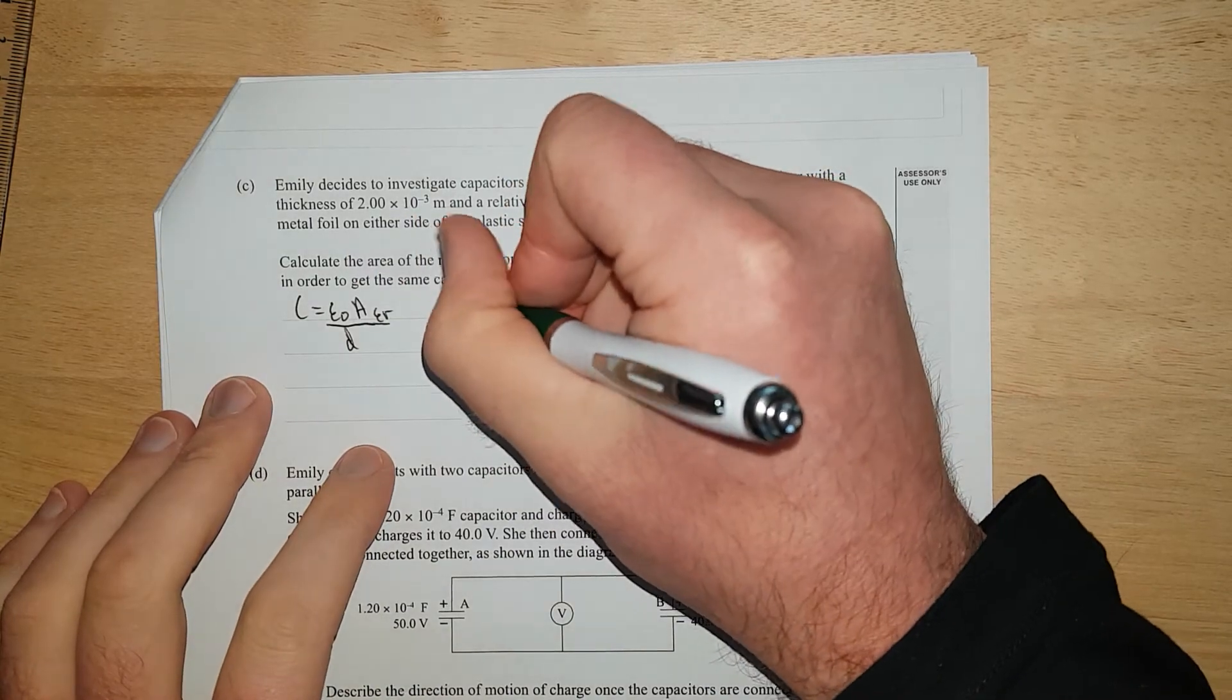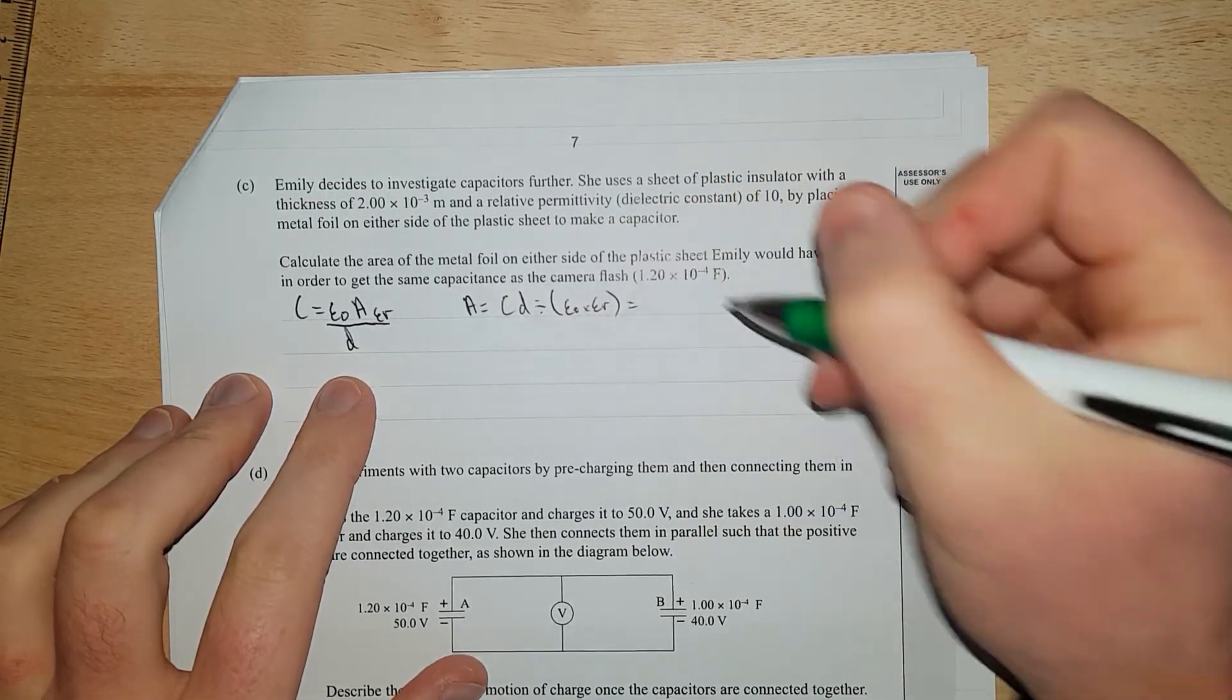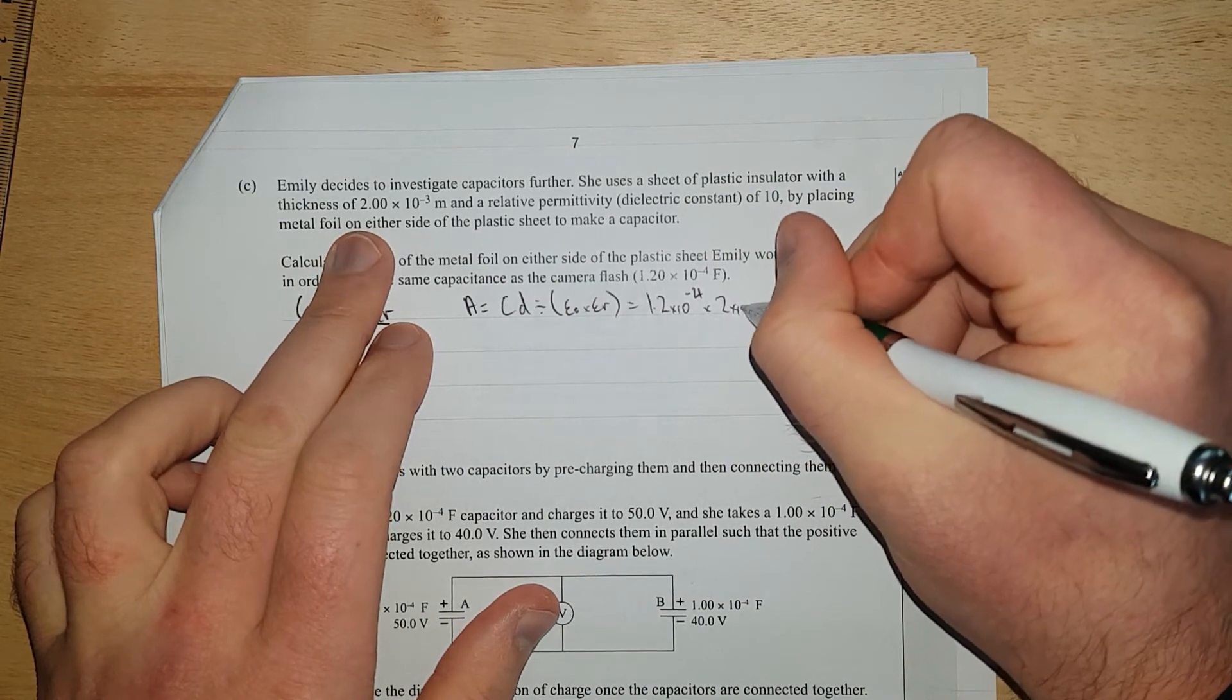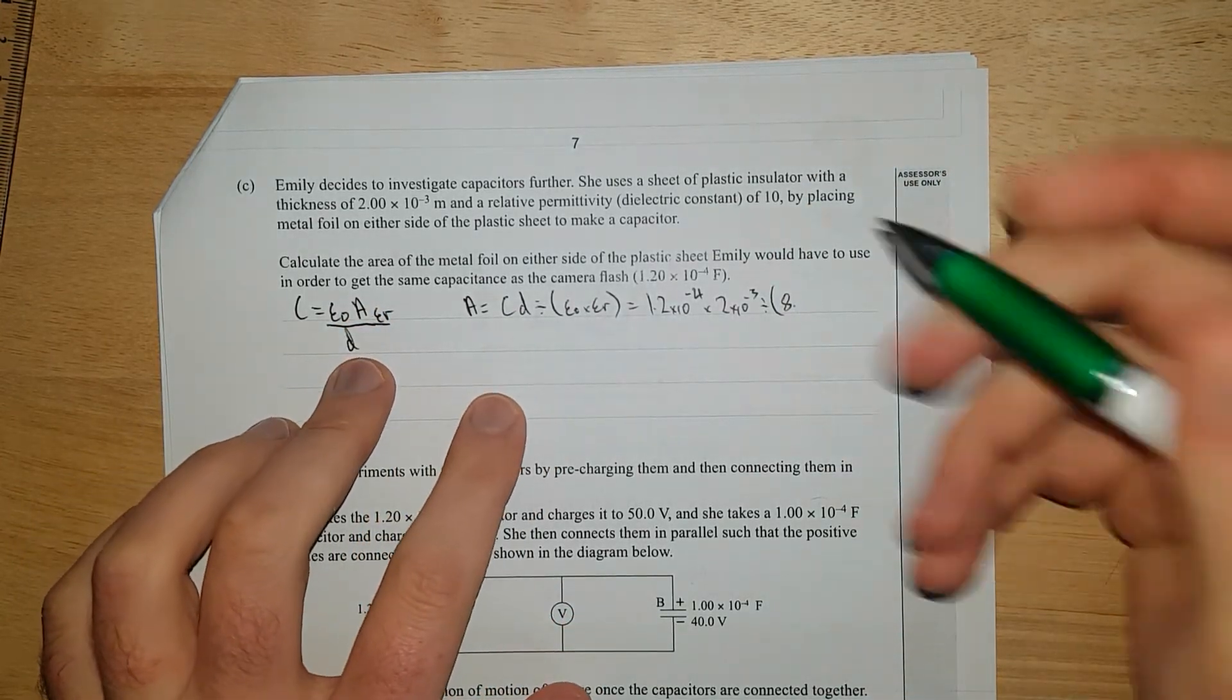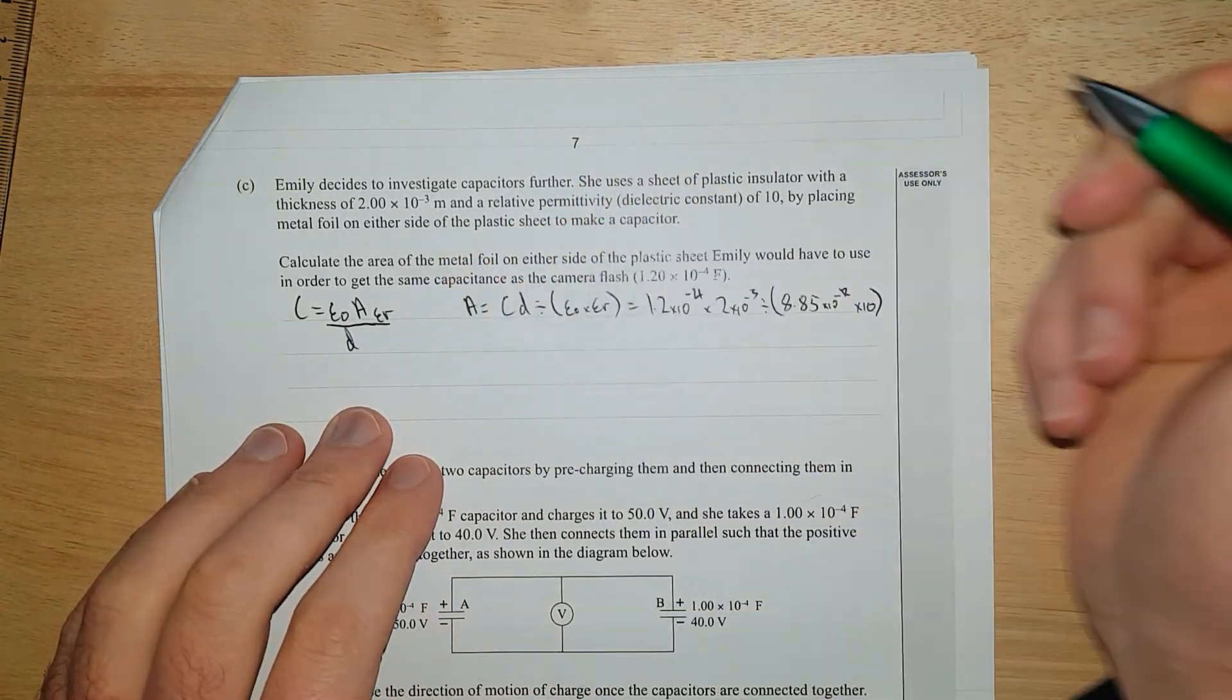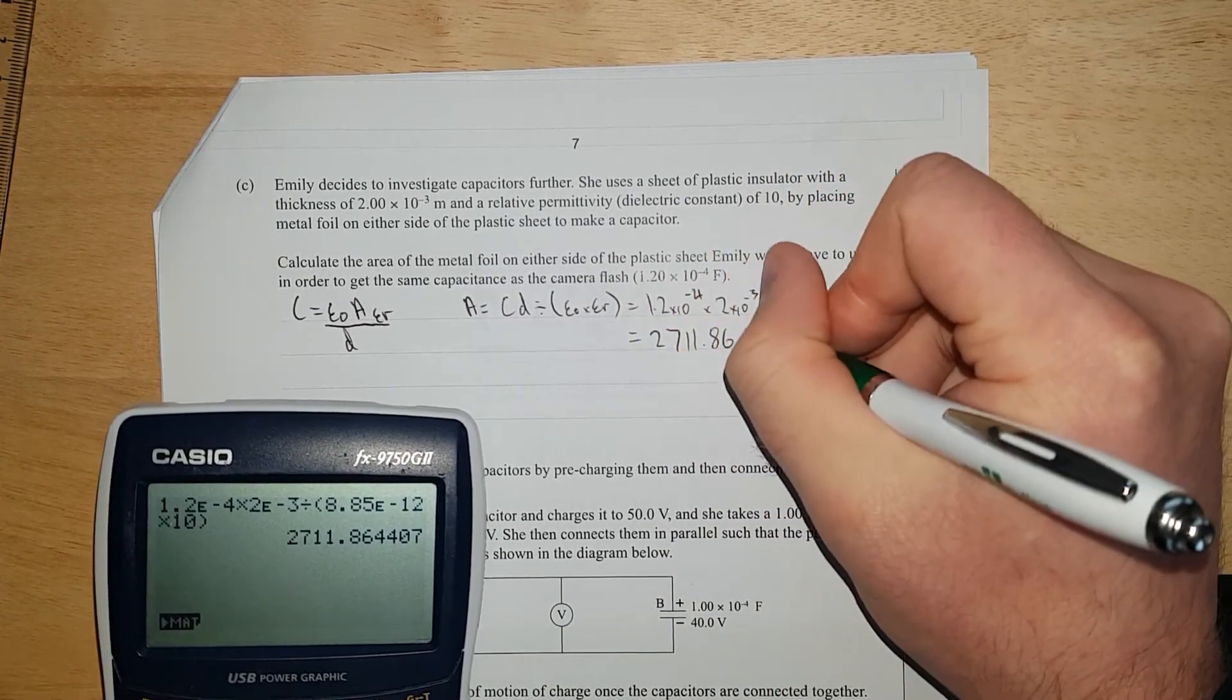We're trying to find area. So the area is going to be equal to Cd divided by epsilon naught times the dielectric constant. That equals 1.2 times 10 to the negative 4 times the separation distance, 2 times 10 to the negative 3, divided by 8.85 times 10 to the negative 12. And then the scaling factor is 10, the dielectric constant. That gives me 2,711.86 meters squared. That is a ridiculous amount.